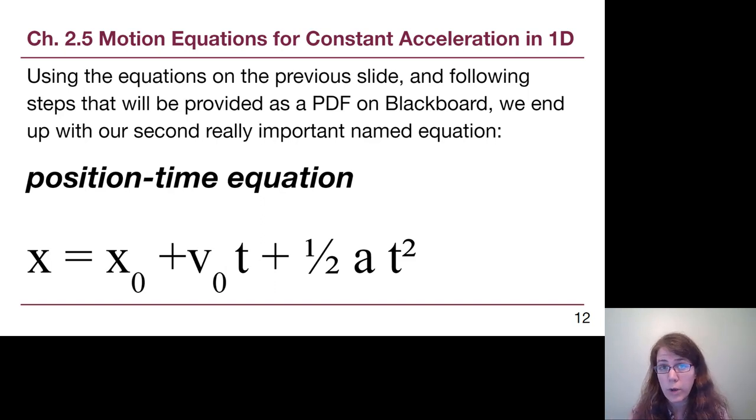Again, this is not coming out of nowhere, and normally we show the full derivation on the chalkboard. We are going to post that as a PDF instead. So we end up with our second really important named equation, which is the position-time equation. It is useful if we are trying to find a given position at a known time, or if we are trying to find a time at a known position. It is kind of in the name. It tells us what it does.